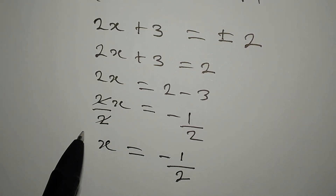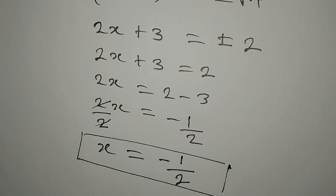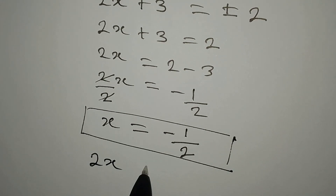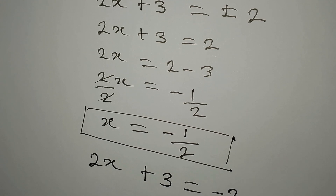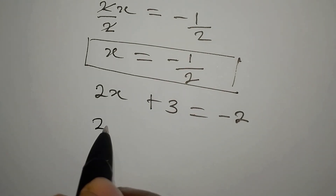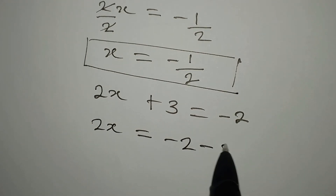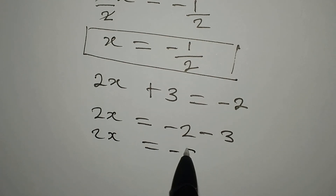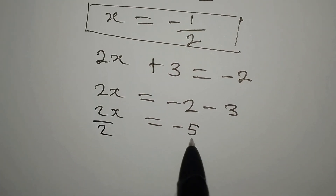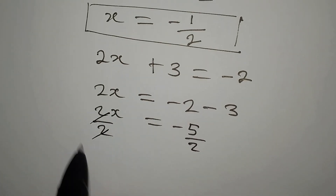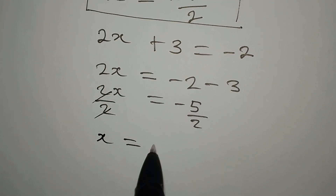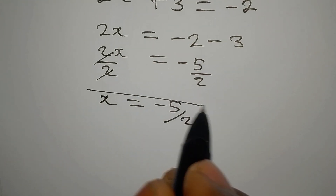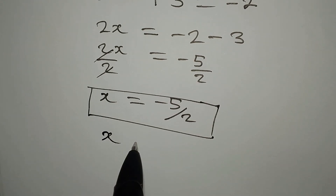Now picking the negative case, we have 2x + 3 = -2. So 2x = -2 minus 3, which gives 2x = -5. Dividing both sides by 2, x is equal to negative 5 over 2. So our two solutions are x = -1/2 and x = -5/2.